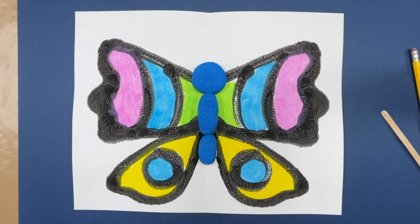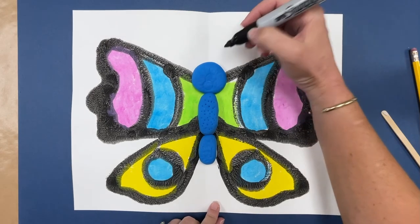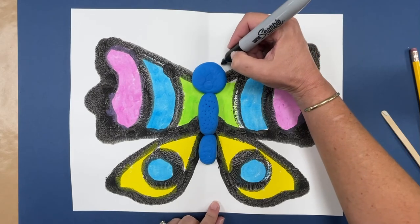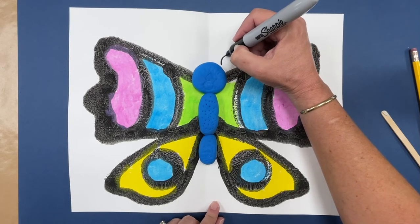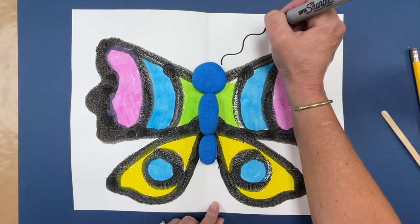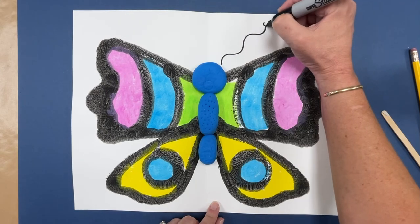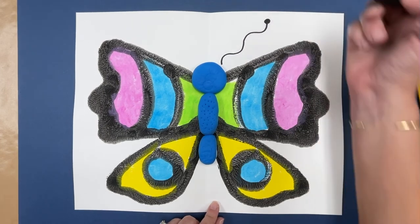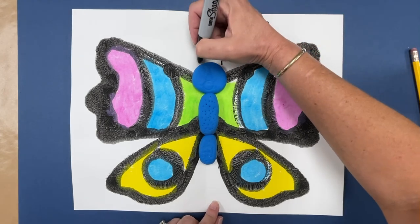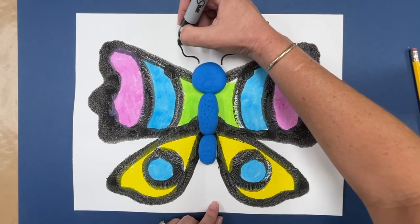And then the very last thing that you're going to do is let the students draw their antenna on with a Sharpie. So we're going to come up the top of one side and let them decide what kind of line they want their antenna to be. We can use all kinds of lines. You can make a swirly line. I made a curvy line and remember it's symmetrical. So do the same kind of line on the other side.